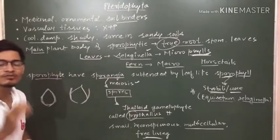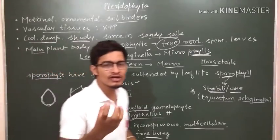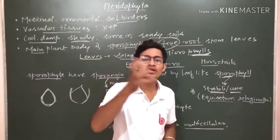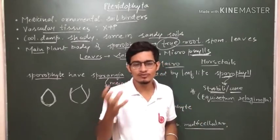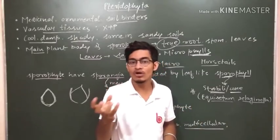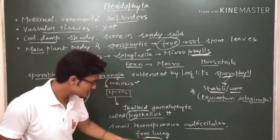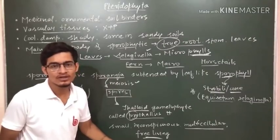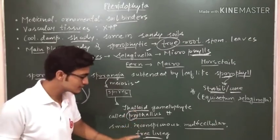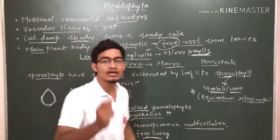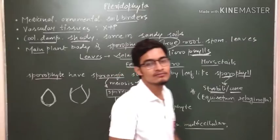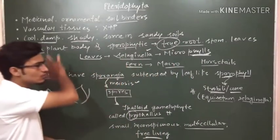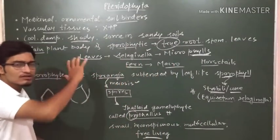The prothallus is free-living. In bryophytes, the sporophyte depends on the gametophyte for its nutrition and is not independent. But in pteridophytes, the gametophyte — the prothallus — is photosynthetic and independent. This is a major difference between bryophytes and pteridophytes.